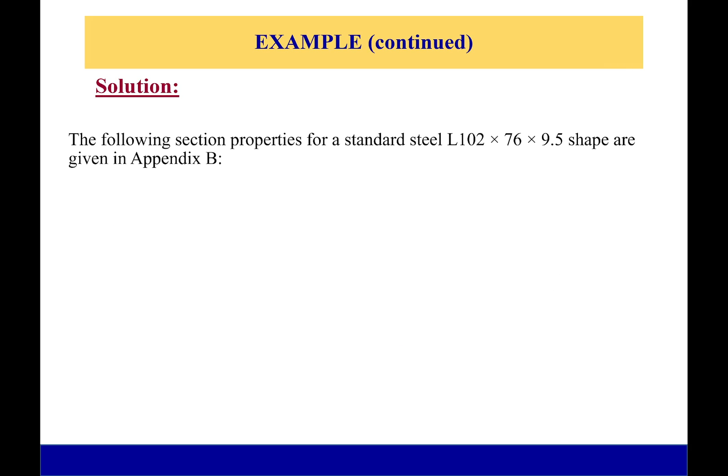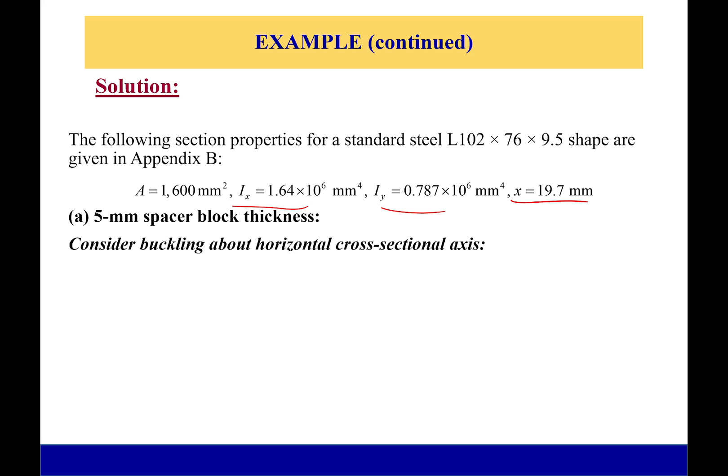Okay, so first off we don't have to calculate anything for those shapes – just look it up. It's in the appendices for an L block. You can look up and find out that the area is going to be 1,600 mm², moments of inertia around the x-axis and y-axis are given, and we have this value right here which is 19.7 mm, which is our centroid.